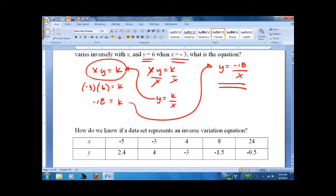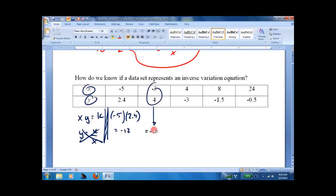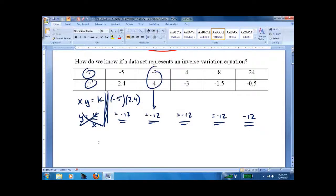So how do we know if a data set represents an inverse variation? I just showed you. The formula was xy equals k which is the same as y equals k over x. We don't want to use this. We want to use this. We just multiply down. That's x. That's y. Let's see if we get the same number. Negative 5 times 2.4 equals negative 12. Negative 3 times 4 equals negative 12. 4 times negative 3 equals negative 12. 8 times negative 1.5 equals negative 12. Negative 12. Yes, it's inverse variation.